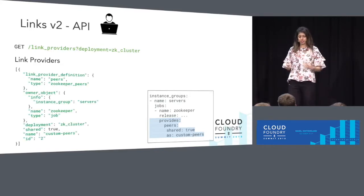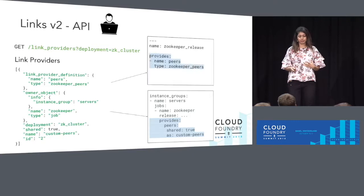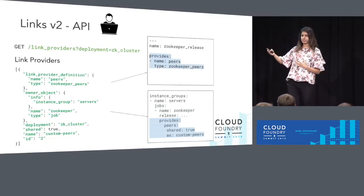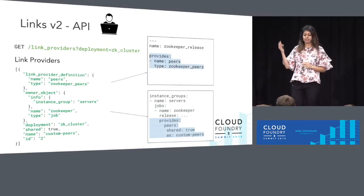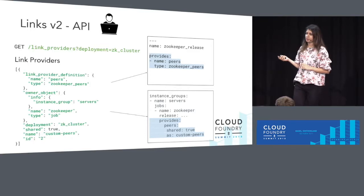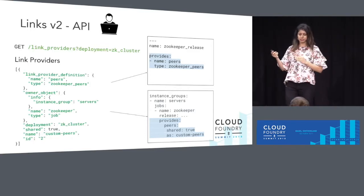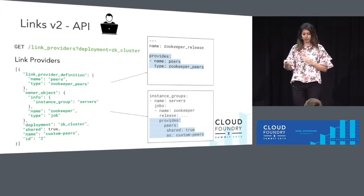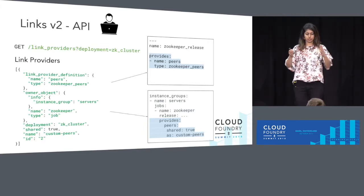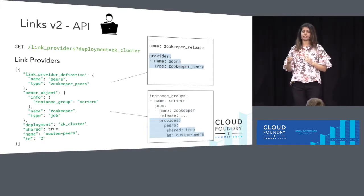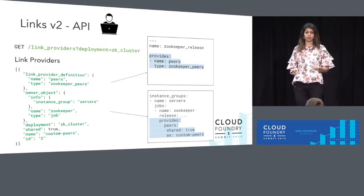The response defines the link — in this case, defined in the release spec with name and type 'peers' and 'ZooKeeper peers'. It lives in the ZooKeeper job in the server's instance group. It's aliased to 'custom peers' and it's shared across multiple deployments. On the left, you have the actual definition of a link provider as it exists.